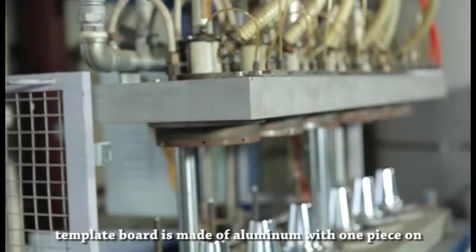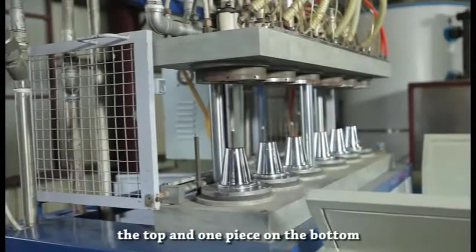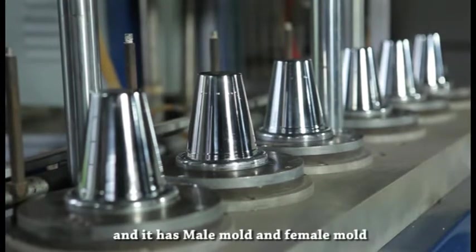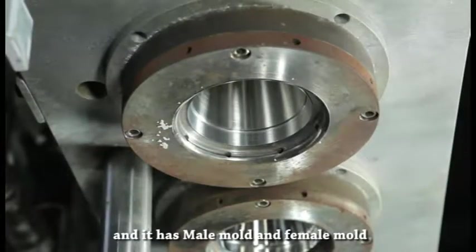The template board is made of aluminum with one piece on top and one on the bottom. The mold is made of stainless steel and bronze and has male mold and female mold.